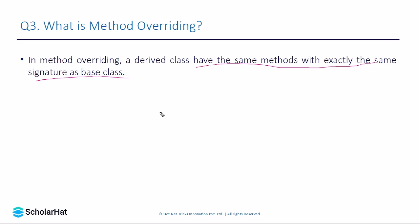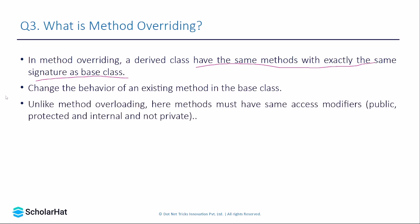If the derived class wants different functionality in its method, the first option would be to create a new method with a different name, which is not advisable. The better option is to keep the same method name as the base class but with a slight modification so it performs as expected. Unlike method overloading, in method overriding the method must have the same access modifier.